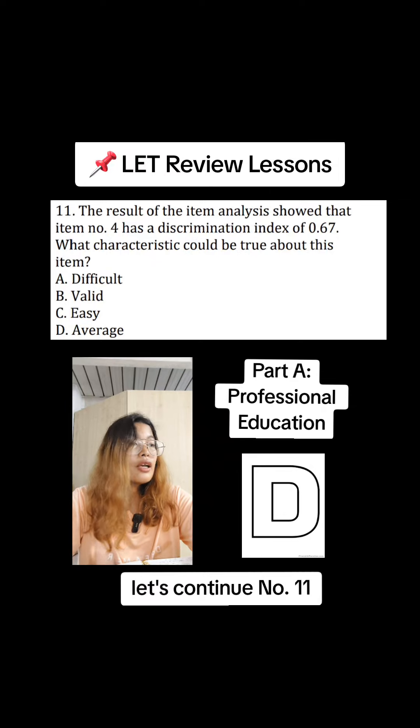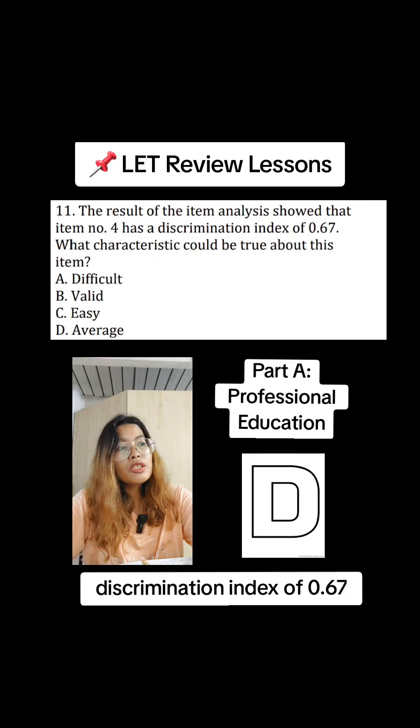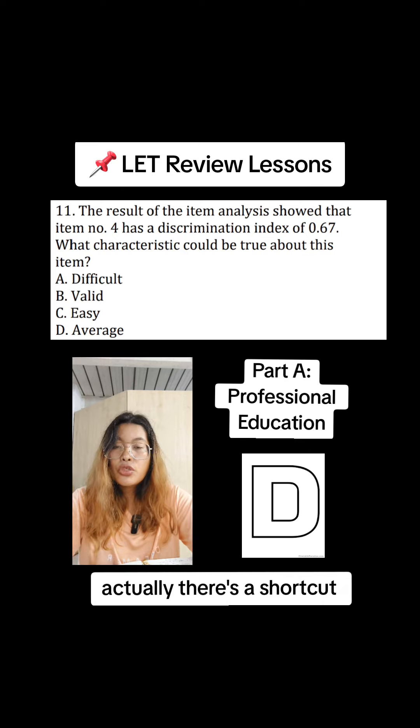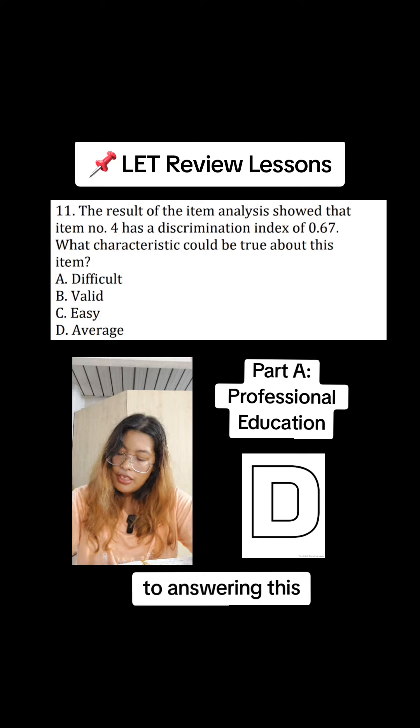Let's continue number 11. And what does the discrimination index of 0.67 mean? Actually, my shortcut to answering this.